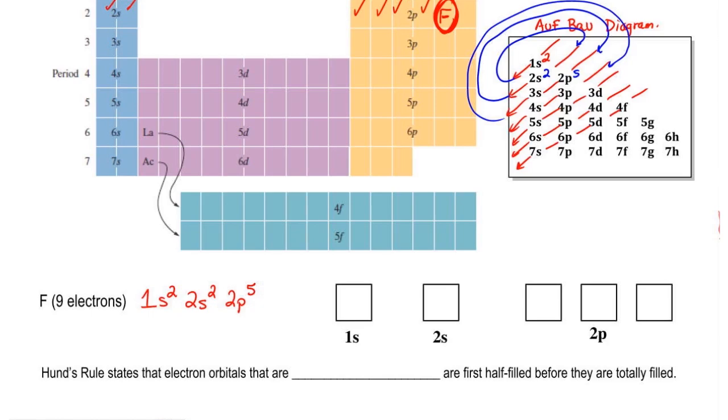Now, we've done the electron configuration. You see these little boxes here? These represent the electron orbitals for each one of those sublevels that we have here. We're going to fill them in. We call these electron box diagrams, where we physically show the electrons within each one of these orbitals.